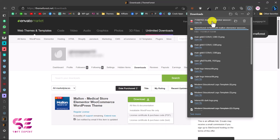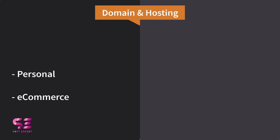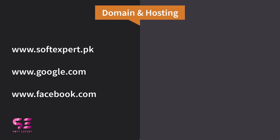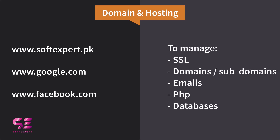Now we have the theme and its purchase code — we just need to upload this theme to our WordPress. For creating any type of website, whether personal, business, or e-commerce, you will need a domain name and hosting. A domain name is your website address, and hosting is online storage where your website files are stored, where you can manage your SSL certificate, domains, emails, databases, PHP versions, and everything related to your website.